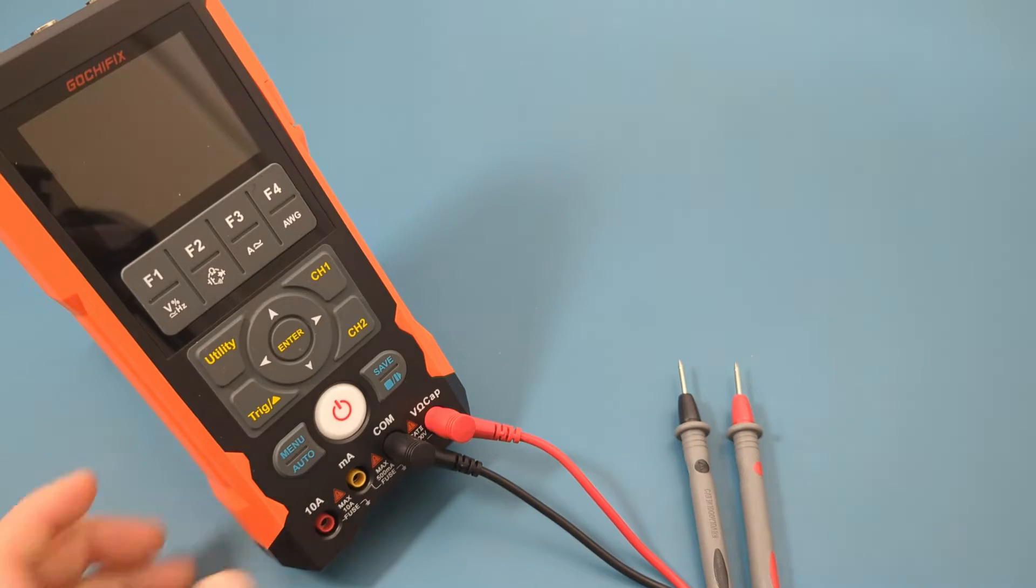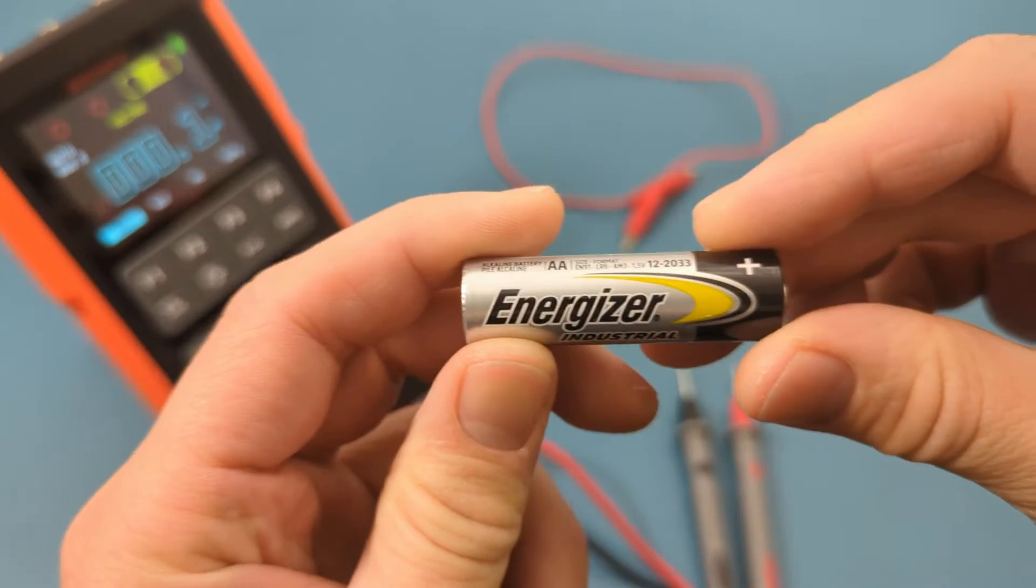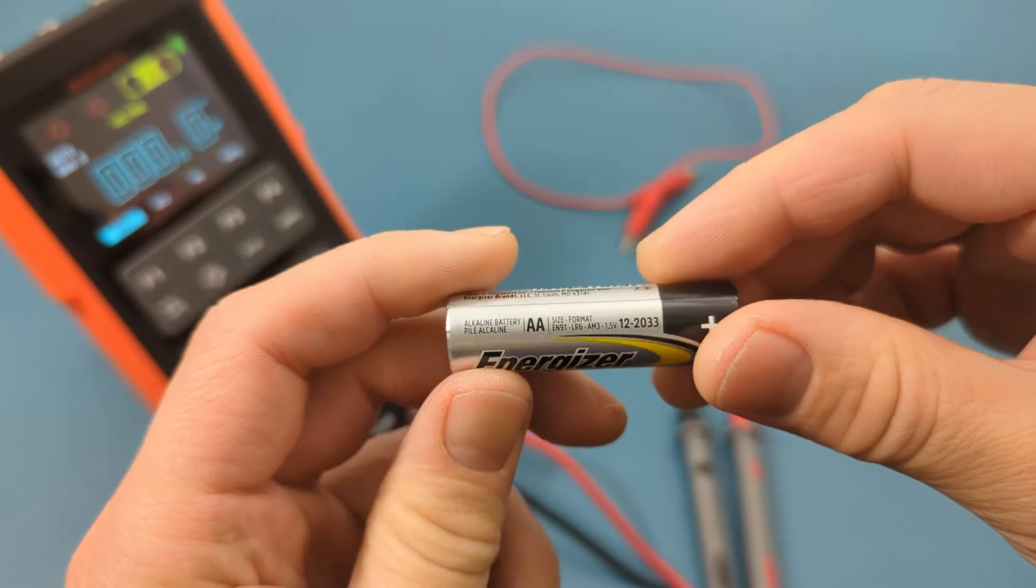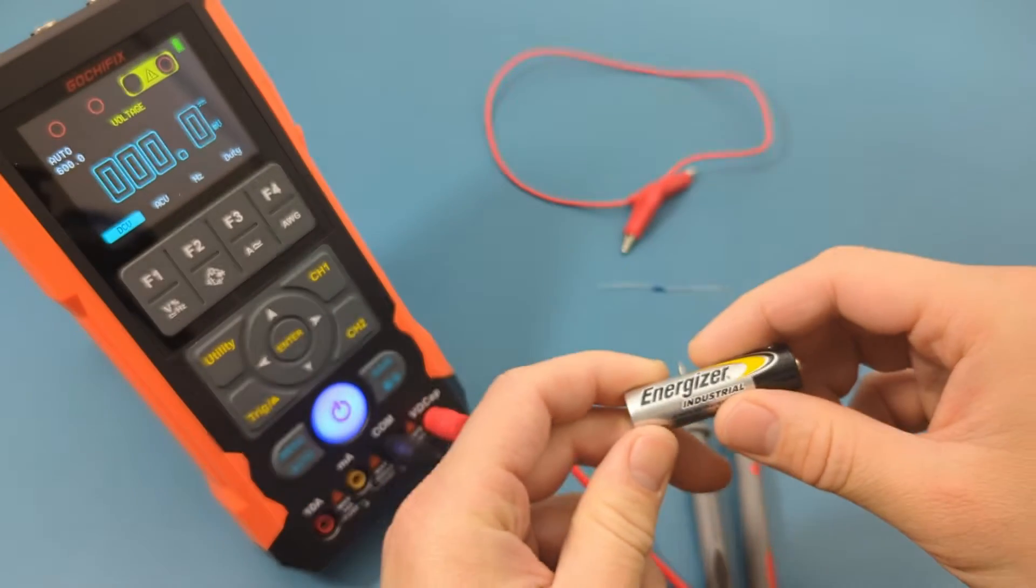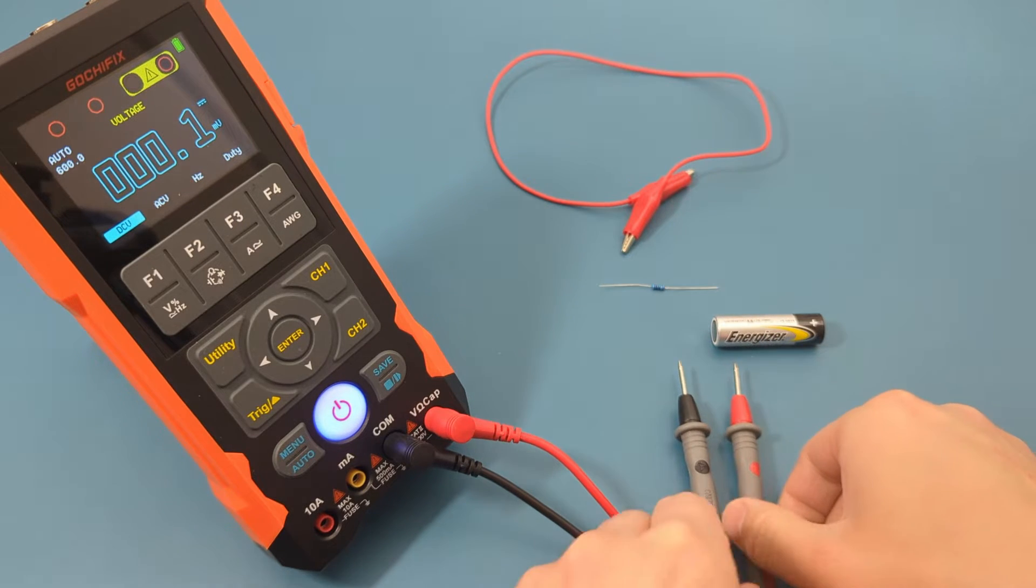The screen features a 2.8 inch color display that is very clear. Now we'll showcase this product by conducting a series of tests, beginning with a voltage check on a battery. I have a double A battery. It should show a reading of 1.5 volts if it's still good.